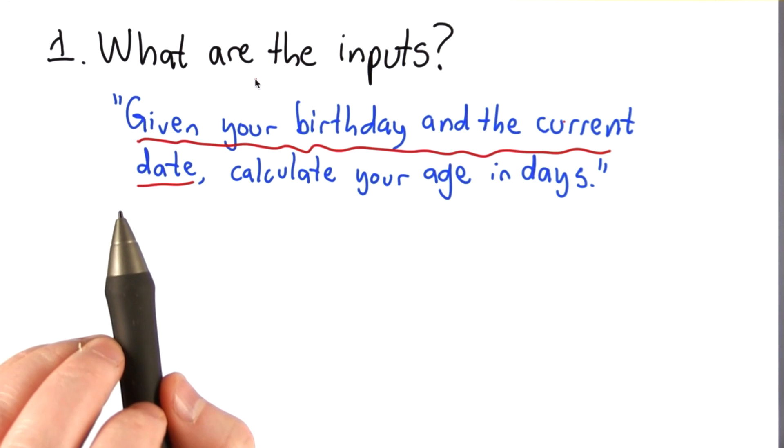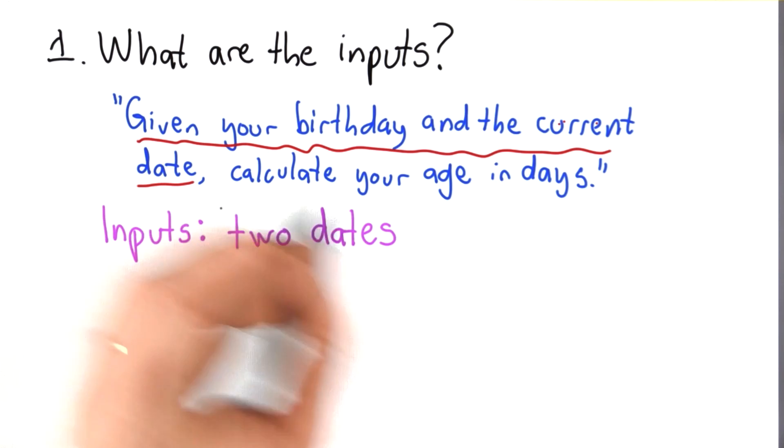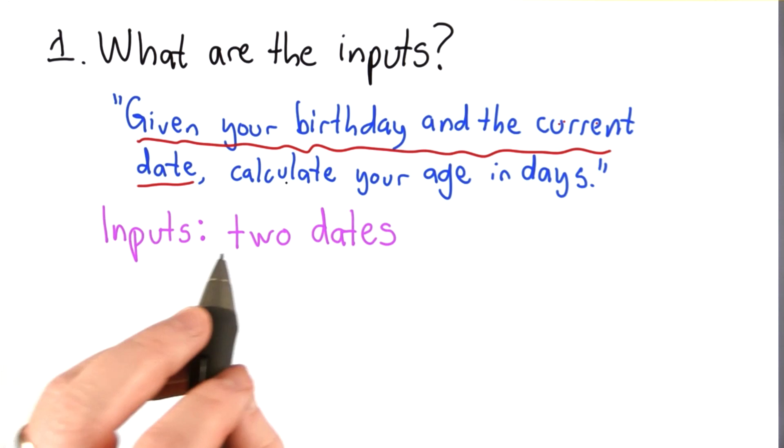What's the set of inputs we really want this to work for? Should it really just work for my birthday and today's current date? If that's all we wanted it to work for, well then we can figure this out once, we don't actually need to write a procedure. So I think what is really intended by this is something much more general. So the inputs are really two dates, and that gives us the type of input, that gives us a set of all possible inputs.